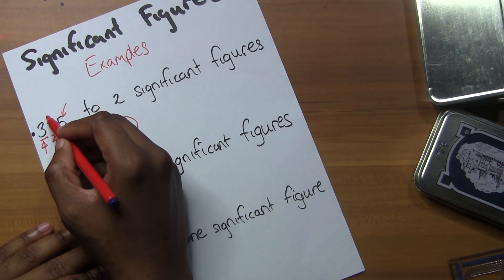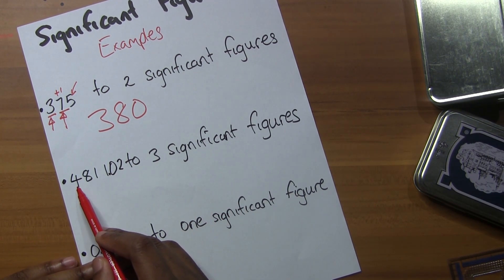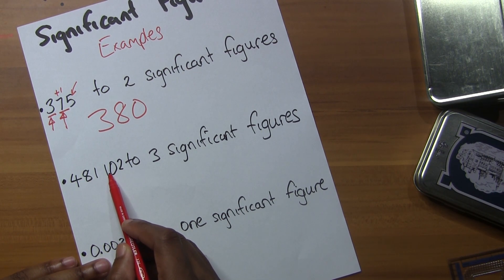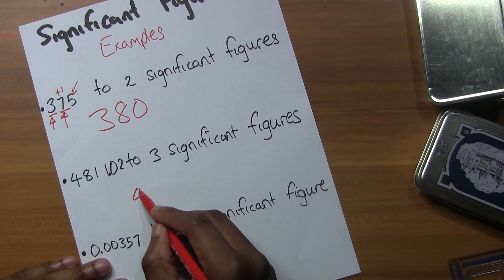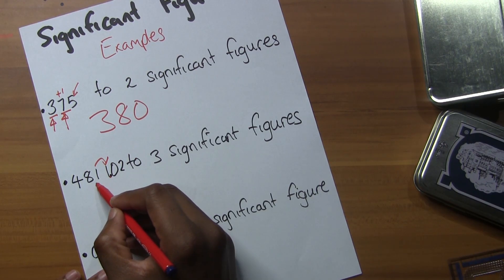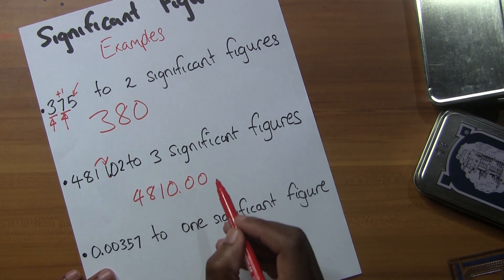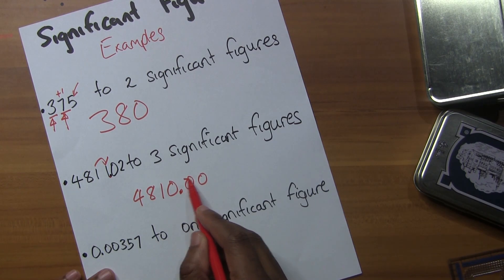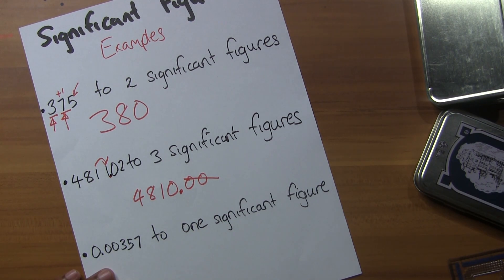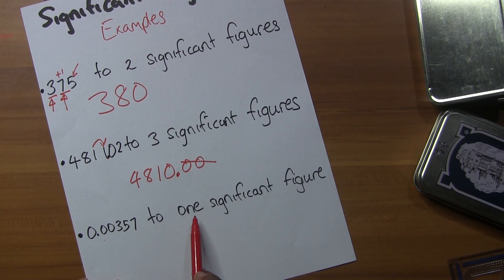What about this one: 4811.02 to three significant figures. That's 4, 8, 1 - I'm leaving this as 1 since the number that comes after is 1, so we don't round up. Everything else becomes zero, so 4810. The zeros that come after the decimal point aren't very important, so I can leave them out.